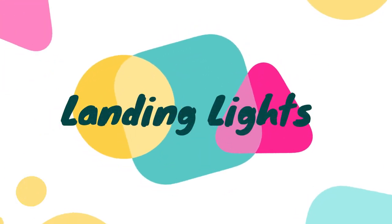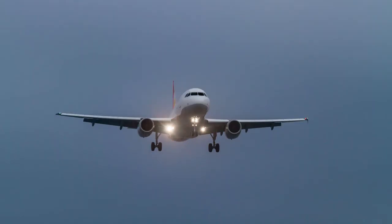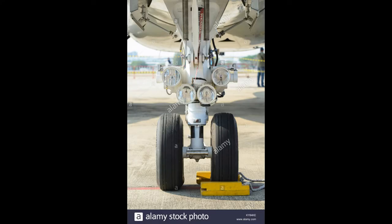Landing lights: landing lights are high intensity lights used to illuminate the runway surface for takeoff and landing, and also to facilitate the aircraft being seen by other pilots. These lights may be placed on wings, landing gear strut, or fuselage.